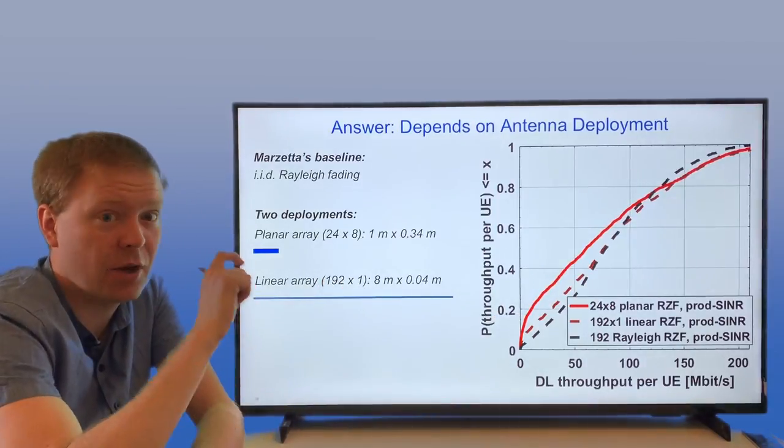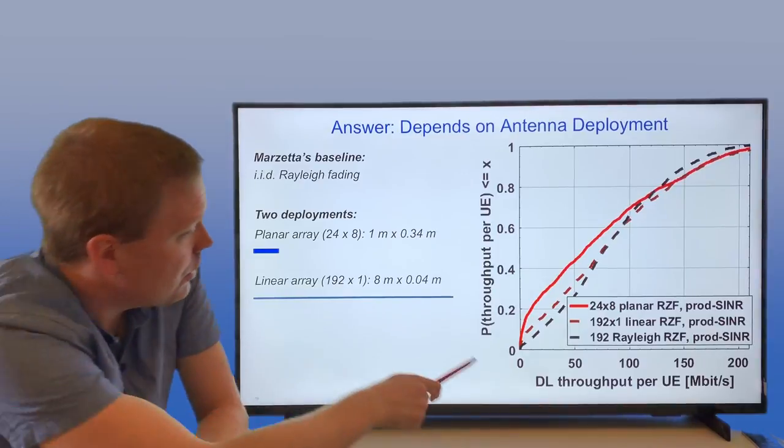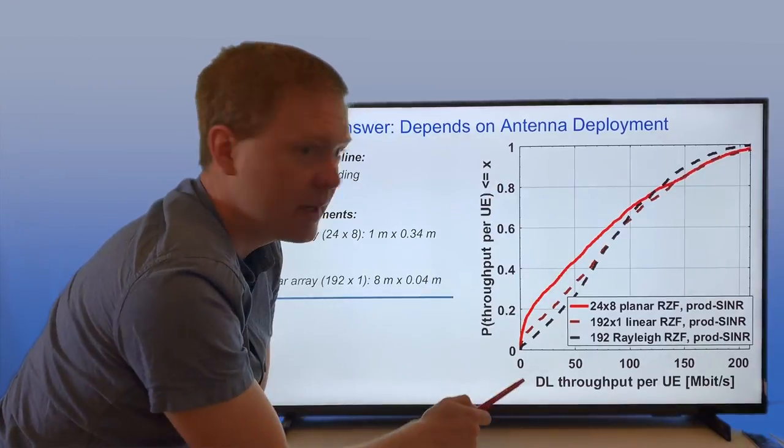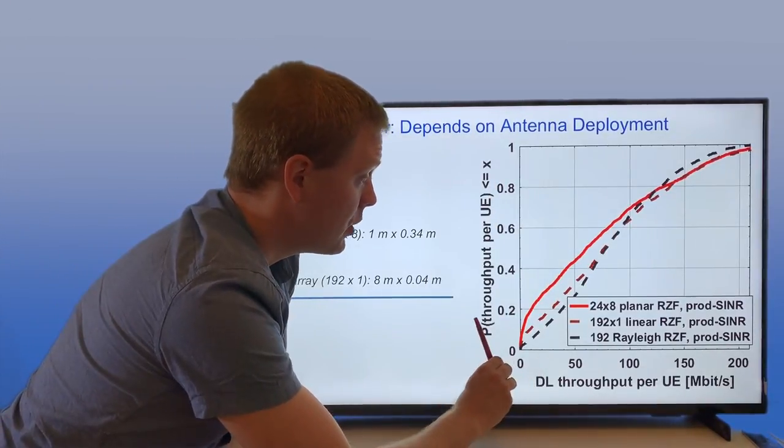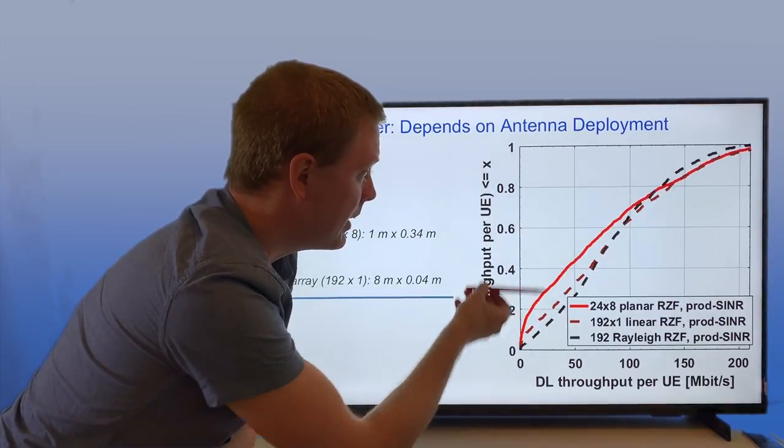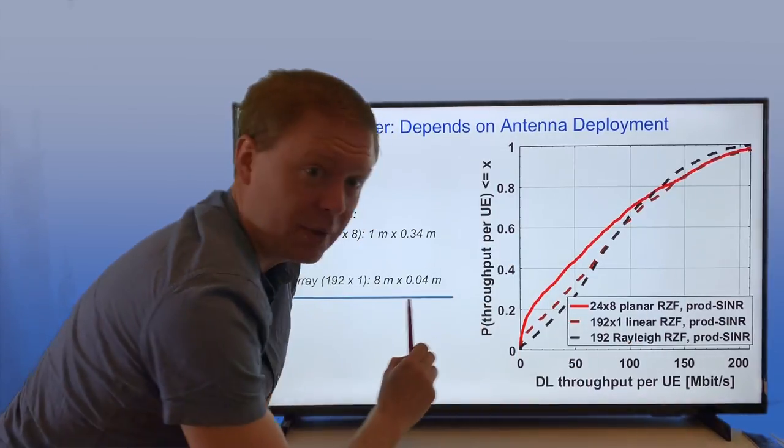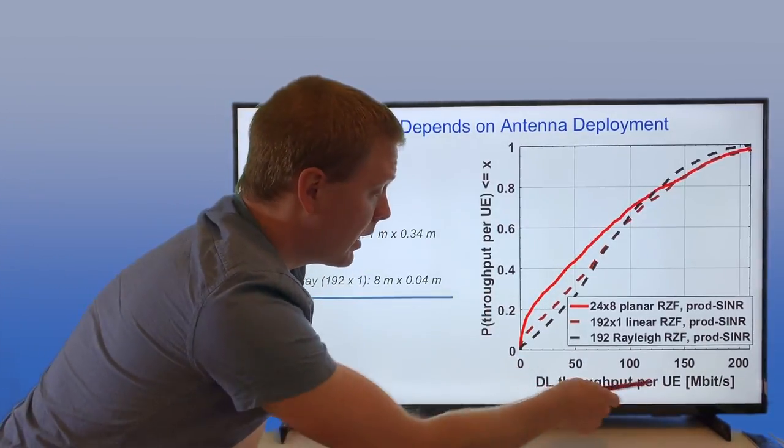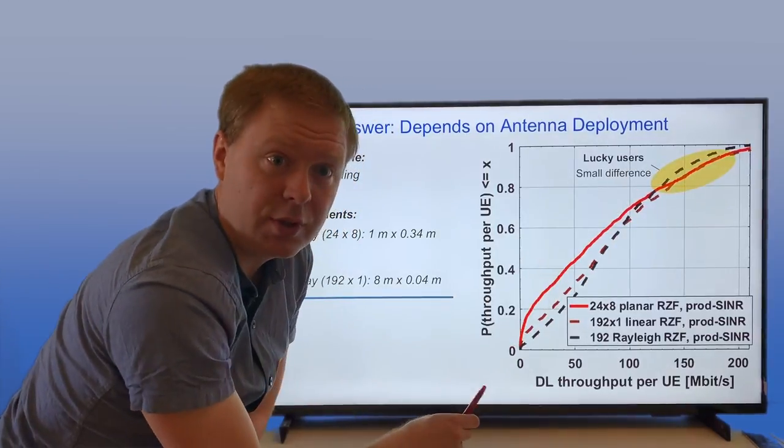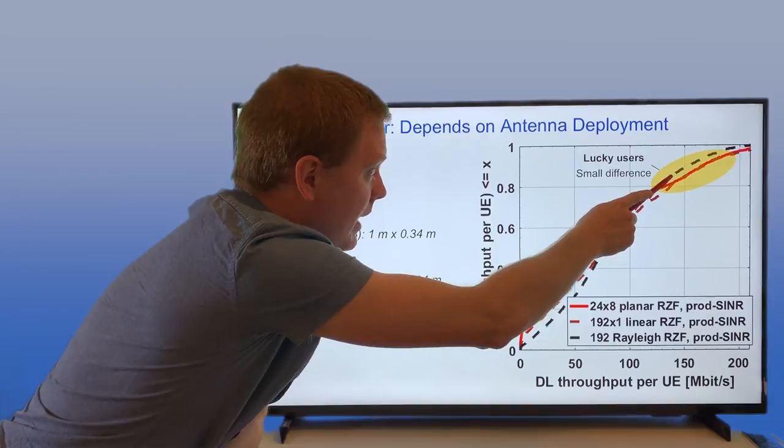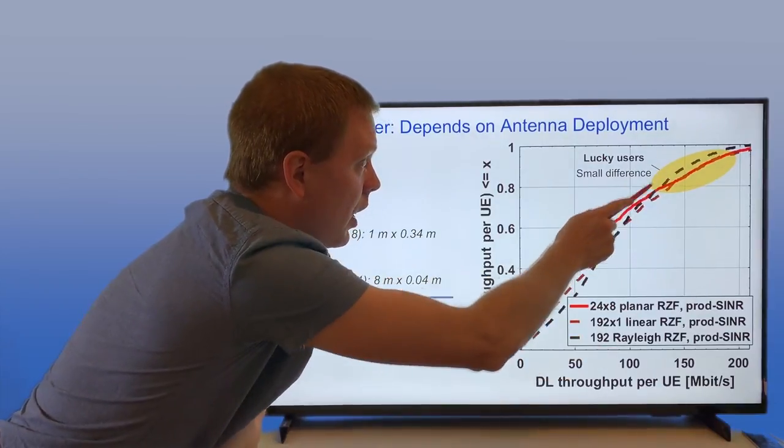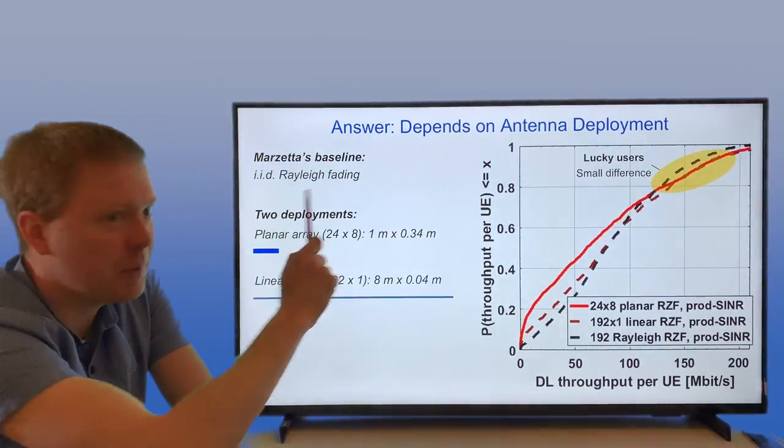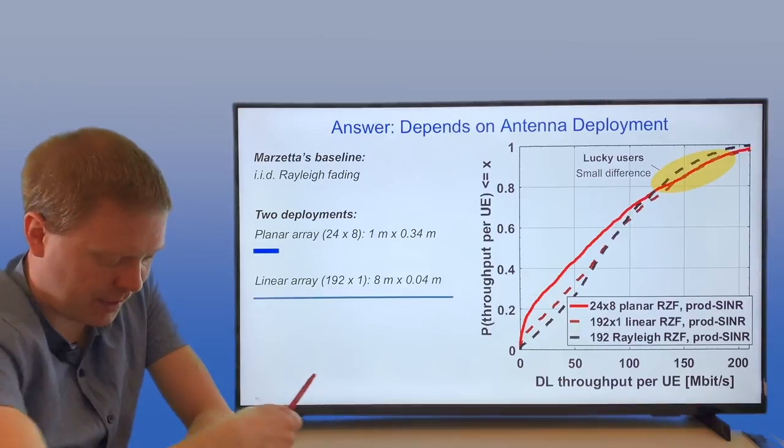Here we can see the downlink throughput per user in megabits per second that we can deliver. This is a so-called cumulative distribution function, showing what you're getting with different probabilities. It's random location of the users and how the variations between these different random locations are changing their throughput. Up here you're a lucky user. You get good signal-to-noise ratio, and in that case, the three different curves are almost overlapping. Then it doesn't matter if we're using any of these two deployments or if we're using the simplified baseline from Massive MIMO papers.